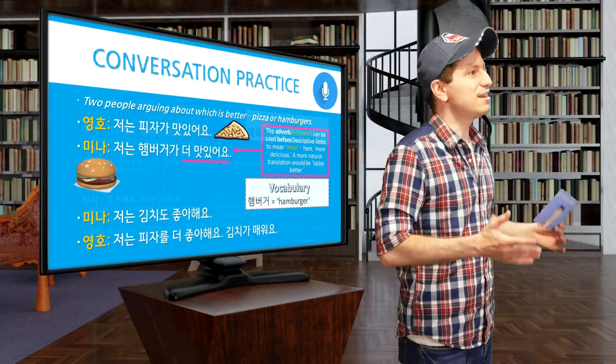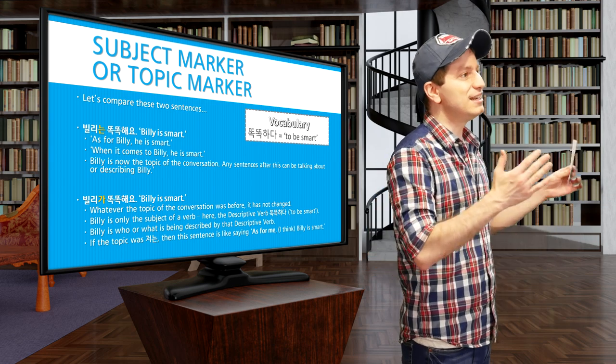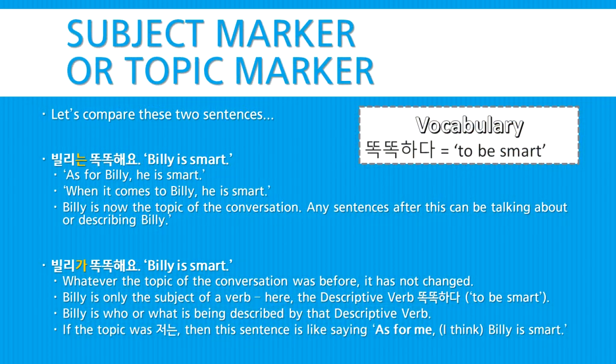Let's do a bit more comparison of the topic marker and the subject marker with these two sentences: 빌리는 똑똑해요 and 빌리가 똑똑해요. First, 빌리는 똑똑해요 — 'Billy is smart,' or 'As for Billy, he is smart,' or 'When it comes to Billy, he is smart.' Here, Billy is now the topic of the conversation, and any sentences after this can be talking about or describing Billy. However, in the sentence 빌리가 똑똑해요, which can also mean 'Billy is smart,' whatever the topic was previously hasn't changed. Billy is simply being marked as the subject of the descriptive verb 똑똑하다 — 'to be smart.' Billy is who or what is being described by that descriptive verb.